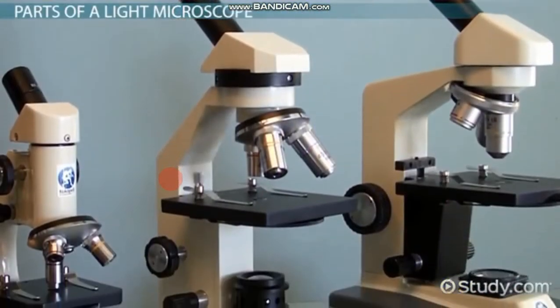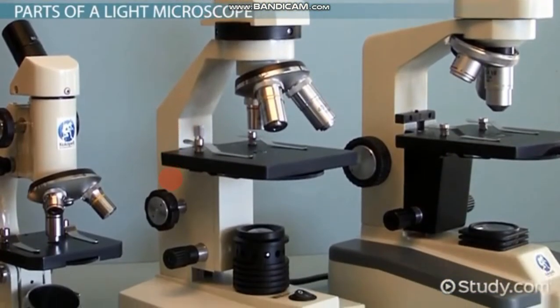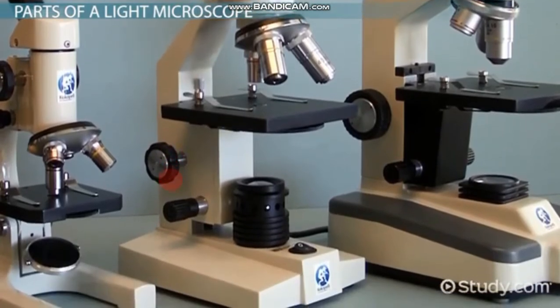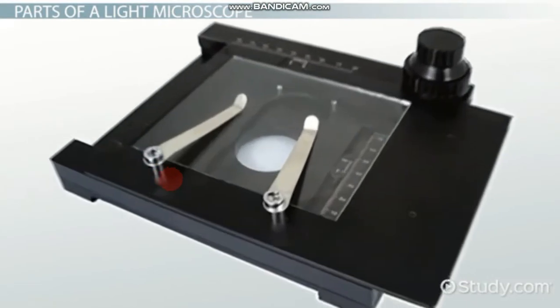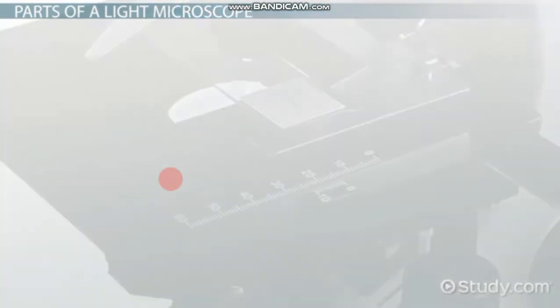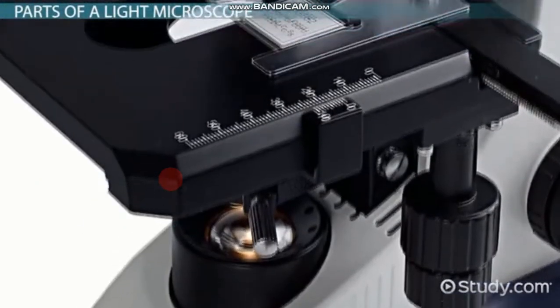Even though microscopes can look very different, they all use the same principles to magnify an object and have the same basic parts. The stage is the platform that holds the sample, usually a slide held in place with clips. This part of the microscope can move up and down to adjust focus.